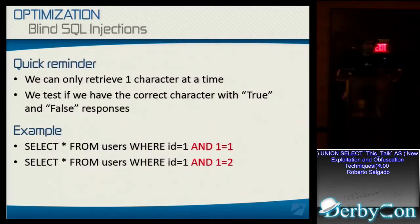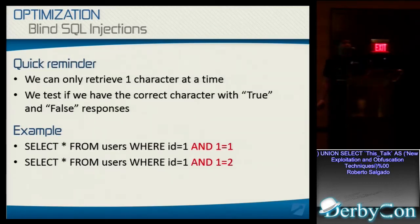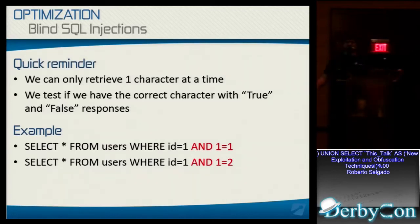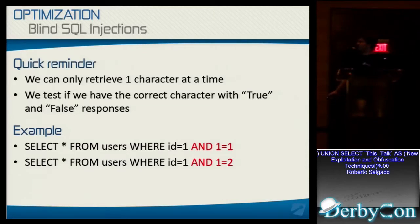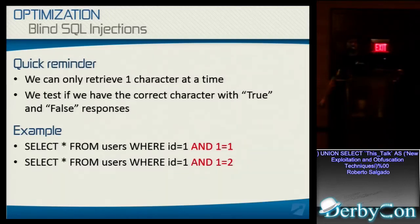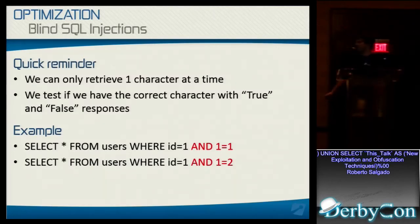A quick reminder: in blind SQL injections we can usually only retrieve one character at a time when exploiting through a blind SQL injection by testing through true and false responses. That's why it's more important to focus our optimization on blind SQL injections — if you have a union you can just dump your whole results in one request, but with blind SQL injections there will always be multiple requests.